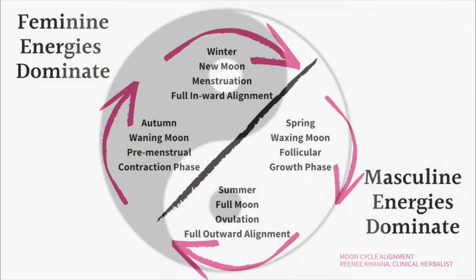When you're in spring and summer, your masculine energies are dominating. And if you look at summer, at the point of ovulation, you have a huge amount of feminine energy going on. And if you look at winter, you do have masculine energy that's coming in strong. So even though feminine energies are dominating in autumn and winter, and masculine energies dominate the growth phase, you still have a little bit of the opposite energy at play. But for the most part, spring and summer — think of more masculine energies dominating. Autumn and winter, your feminine energies are dominating.